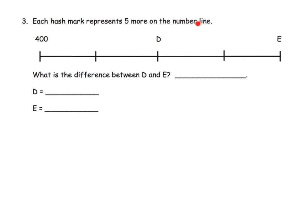Now here we are explicitly told that each hash mark represents five more on the number line, so each hash mark is five bigger than the previous. If we start at 400 and go up one hash mark, that makes 405, then 410, then 415, then 420.